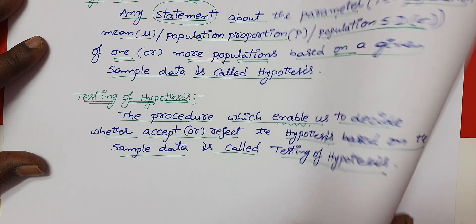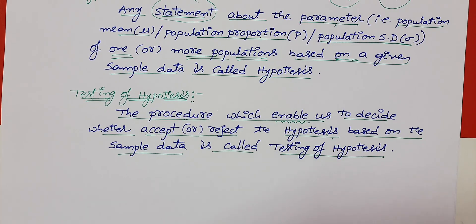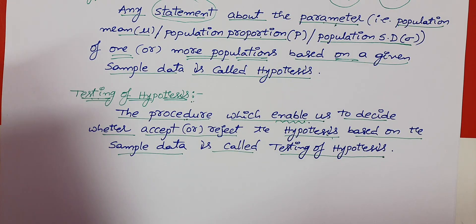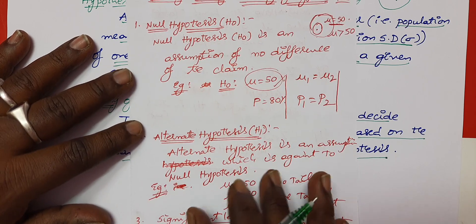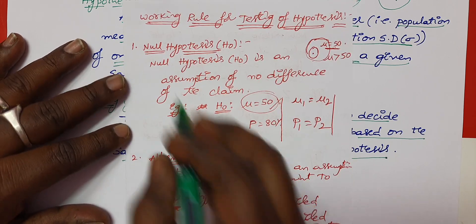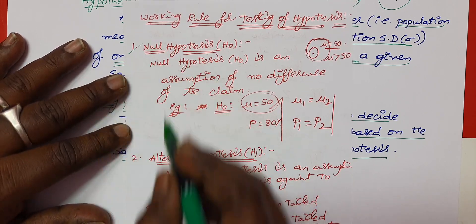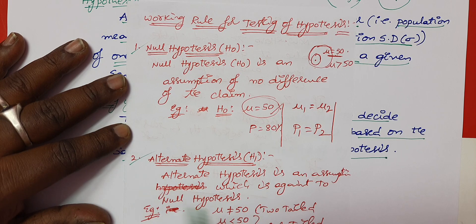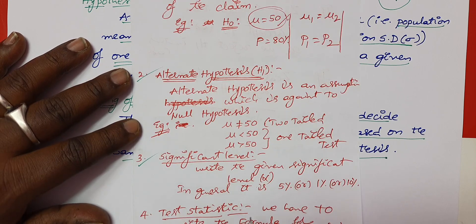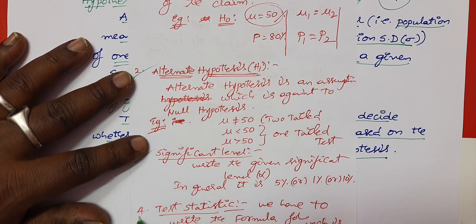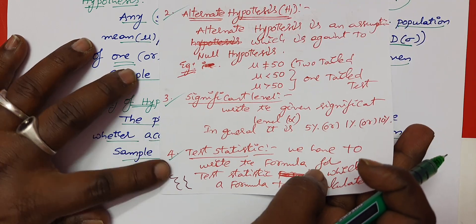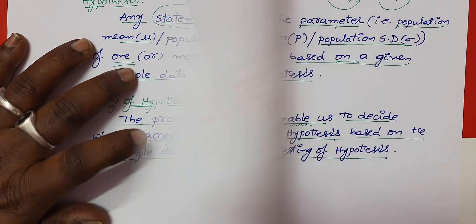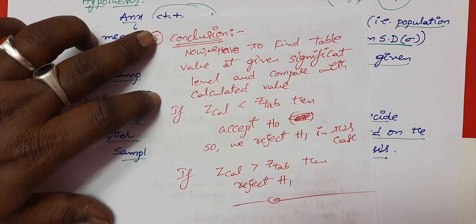In this procedure, we have five steps: the first step is the null hypothesis, second is the alternate hypothesis, third is the significant level, fourth is test statistics, and fifth is the conclusion. In this conclusion, we will accept or reject the statement.